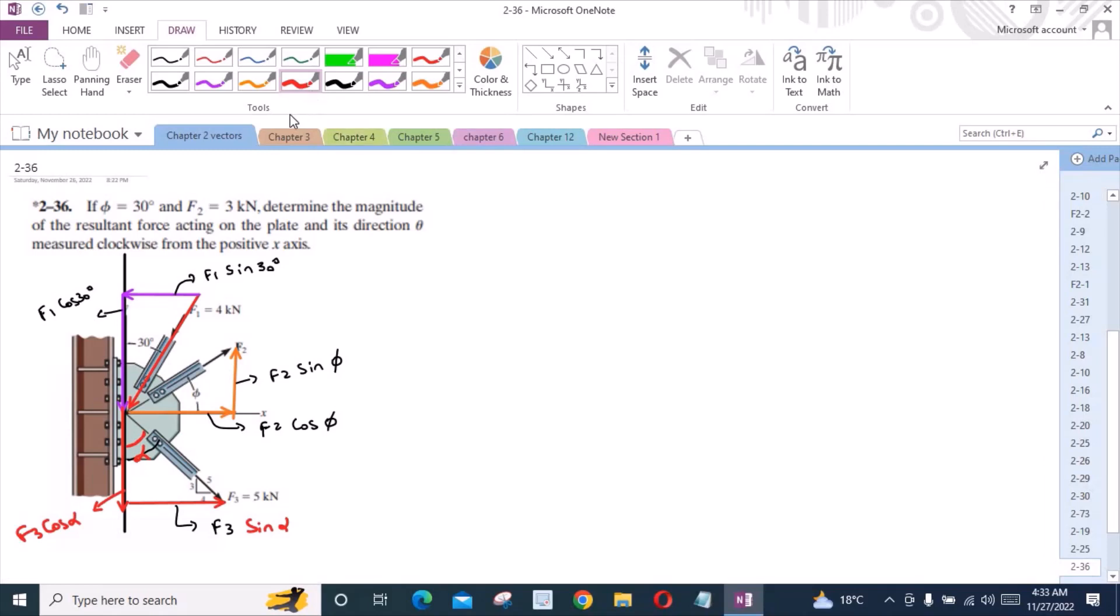Now, we have to resolve all the forces into their components. For the angle alpha, consider a 3-4-5 triangle which is like this. So alpha is this angle. We have 5, 4, and 3. If I write tan alpha is equal to 4 upon 3, then alpha is equal to 53.13 degrees.